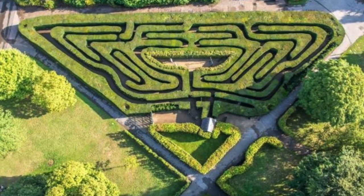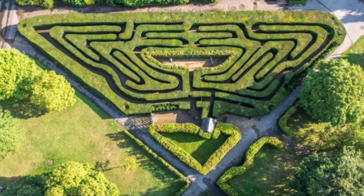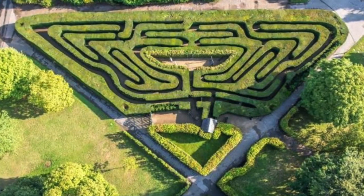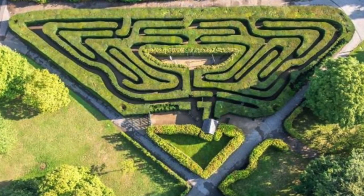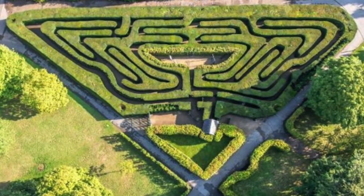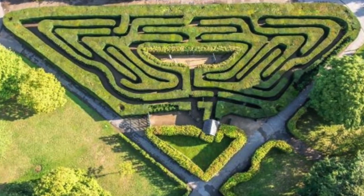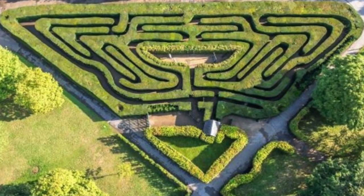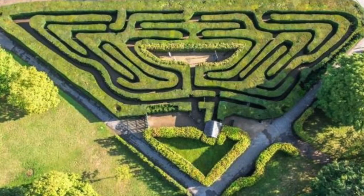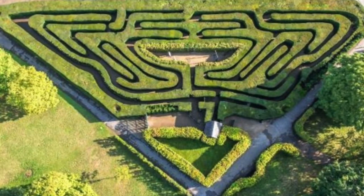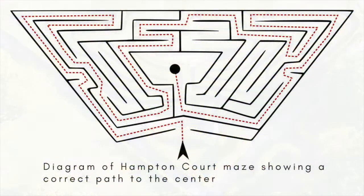Among more recent puzzle mazes are those that European royalty had built on their property to amuse guests or provide places for secret meetings and trysts. The one at Hampton Court Palace on the banks of the Thames, commissioned around 1700, is the best known and has now become a popular tourist attraction. The oldest surviving hedge maze in Britain, with walls tall enough to block any view of the way ahead, it covers some 60 acres but isn't hard to solve. Though not unicursal, it has only a few places where the path forks, so that no one can get lost for long.